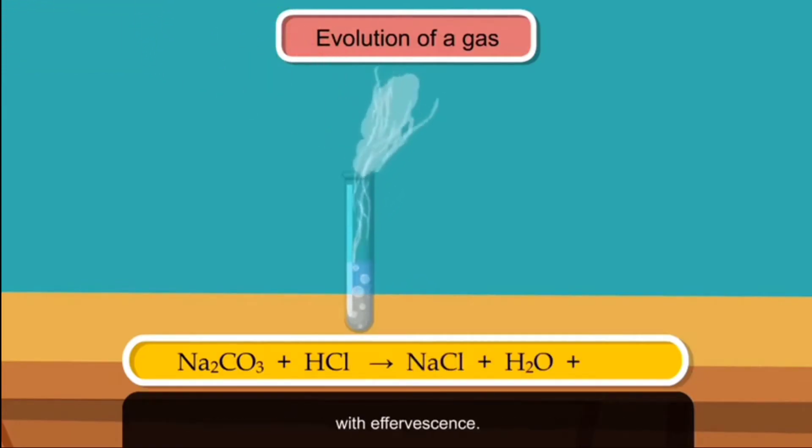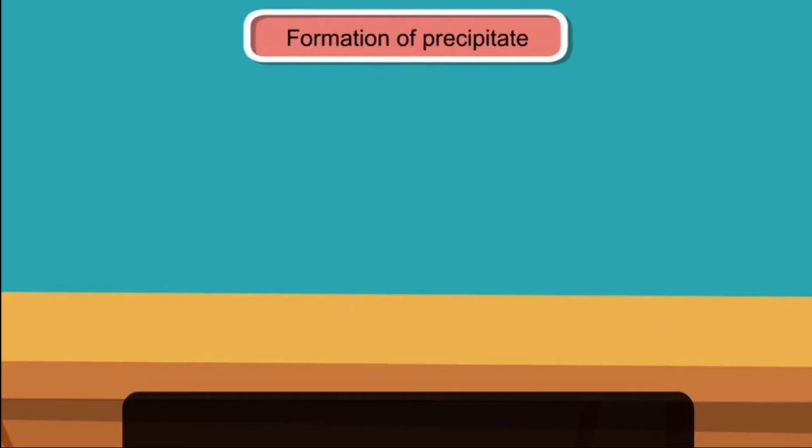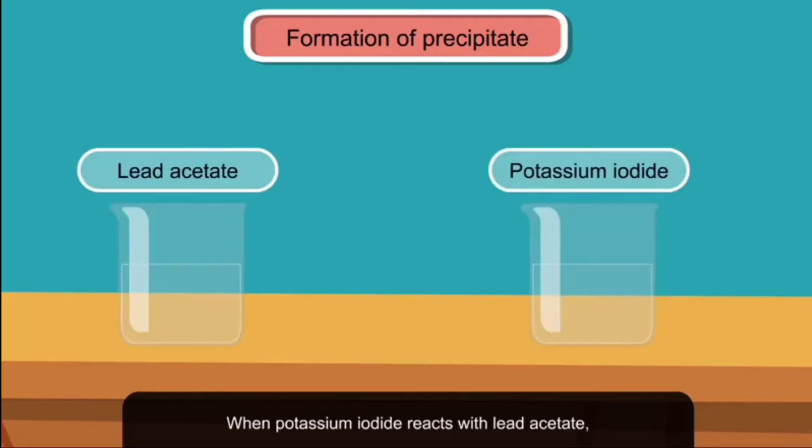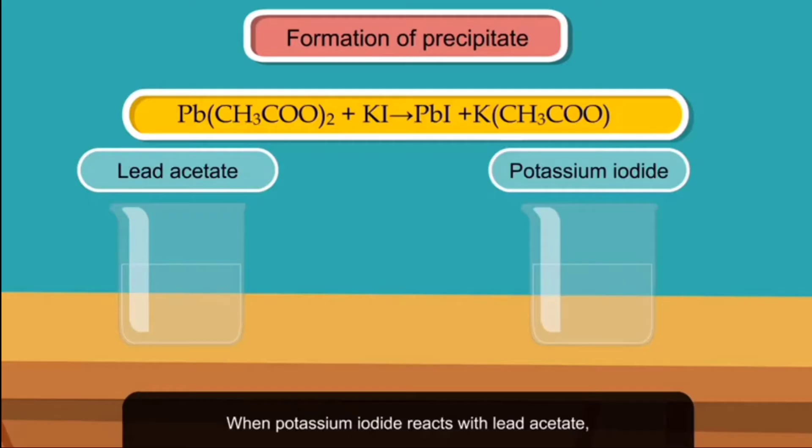Formation of precipitate: Precipitate is a suspension of fine insoluble solid particles in a liquid. A chemical reaction may produce precipitate of the product. When potassium iodide reacts with lead acetate, a yellow precipitate of lead iodide is formed.